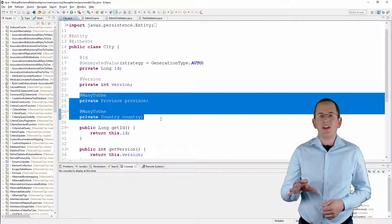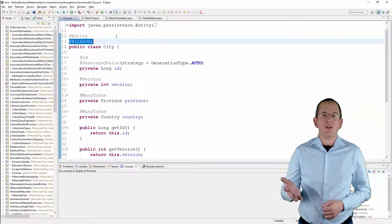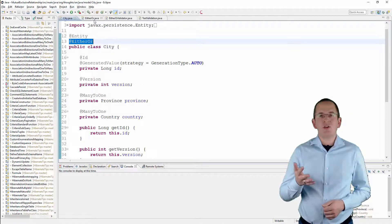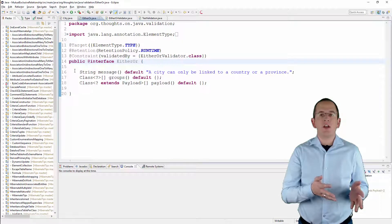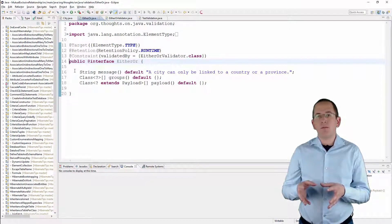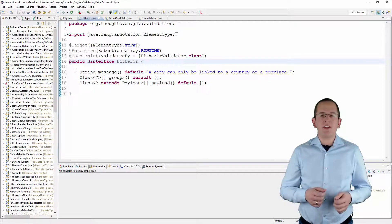But I annotated the city class with an EitherOr annotation. It's a custom annotation, which you can see here. It defines a validation constraint that HibernateValidator will check before Hibernate ORM persists or updates the city entity.